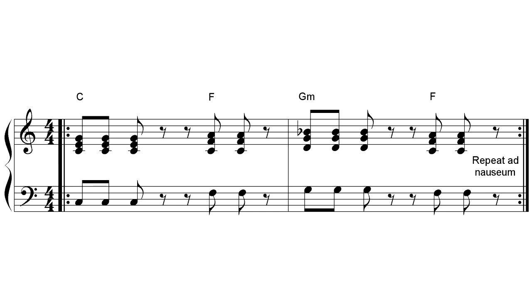Louie Louie substitutes a minor V chord for the normal major, so G major becomes G minor. Here's the same progression twice, first with G major and then with G minor. The basic progression is the same, but you can hear that the flavor changes slightly. So one common substitution replaces a major chord with a minor version of the same chord, or vice versa.